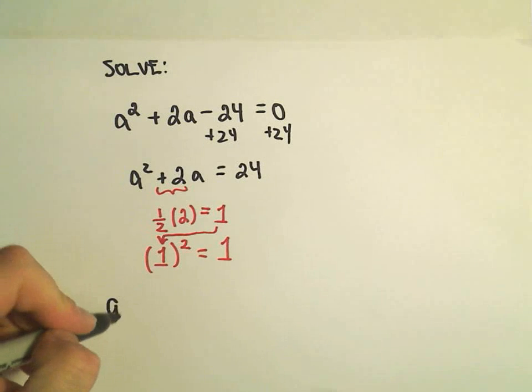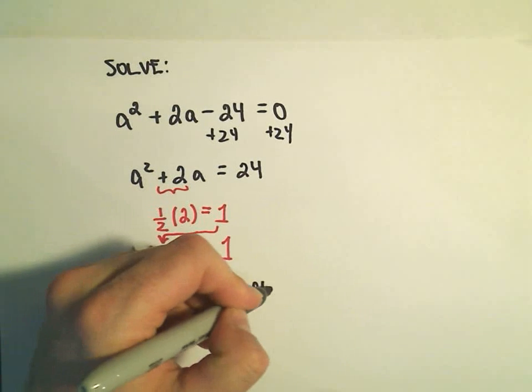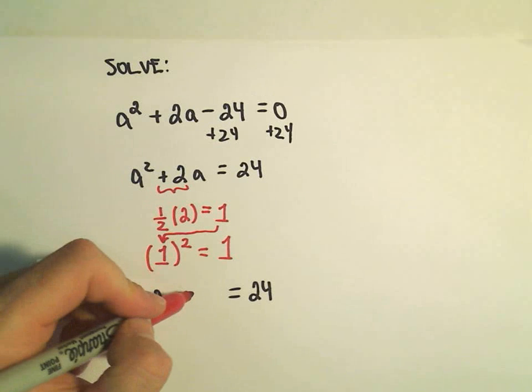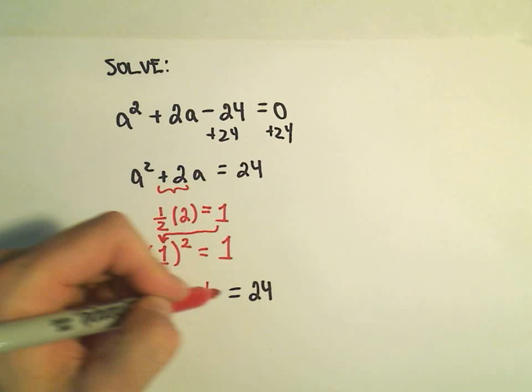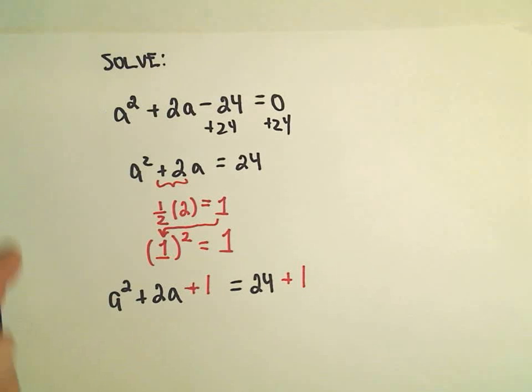And what we do is we add this number to both sides of the equation. So I took one half of my number, got 1, squared it, that keeps it 1. So I'm going to add a positive 1 to both sides of the equation. Then we have a squared plus 2a plus 1.